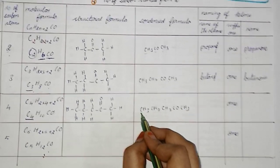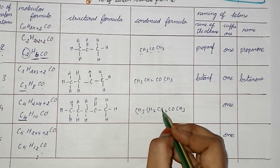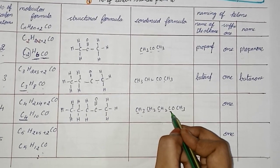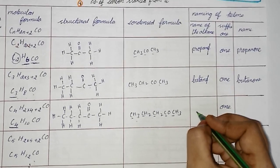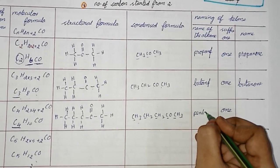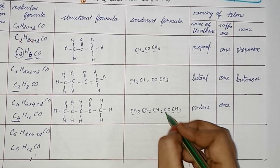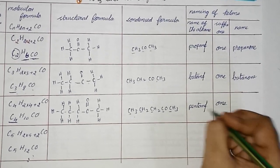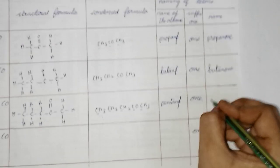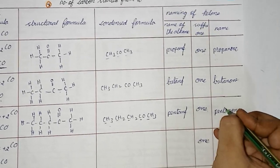Naming: meth, eth, prop, but, pent — so for the alkane, pentane. For the ketone functional group, we add '-one' as suffix to form pentanone.